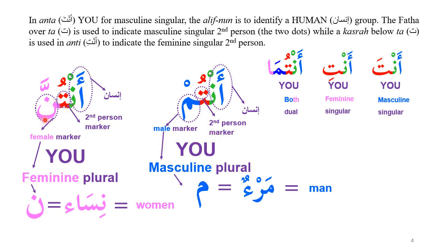Similarly, in anthuna: 'an' is for insan — a group of humans — and ta is the second-person marker. The nun is the female marker here. Since 'nisa' means women, you can clearly understand that anthuna means 'you,' but feminine.